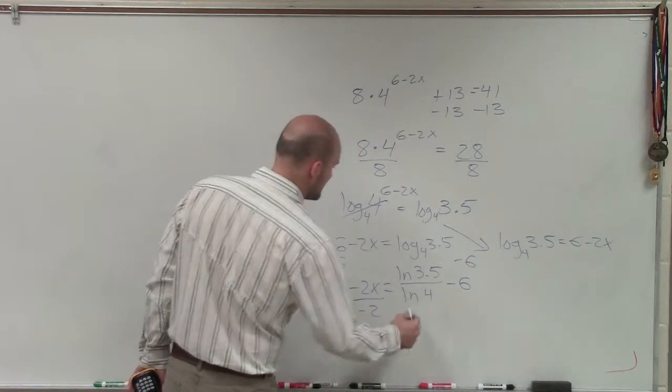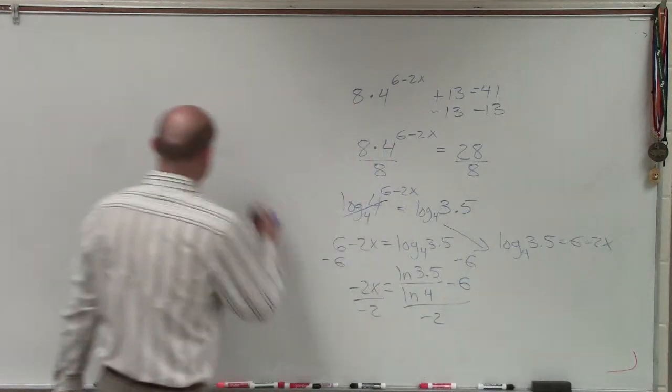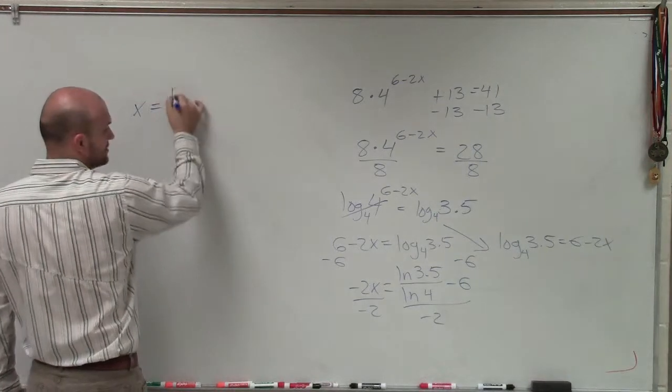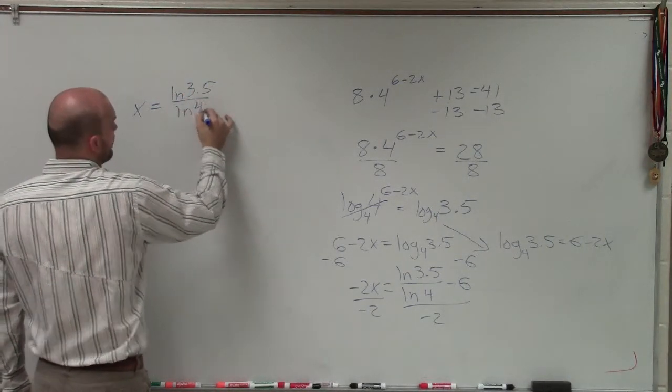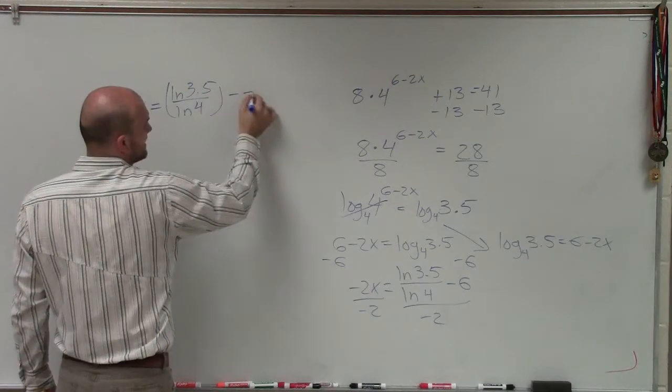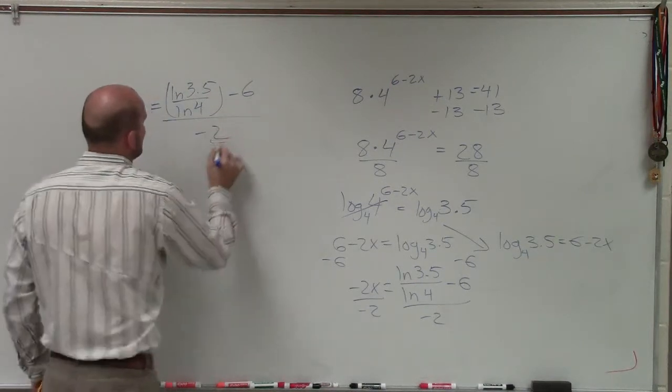ln of 4 minus 6, and then I'm going to divide everything by negative 2. So therefore, this crazy formula: x equals (ln of 3.5 divided by ln of 4 minus 6), all of that divided by negative 2.